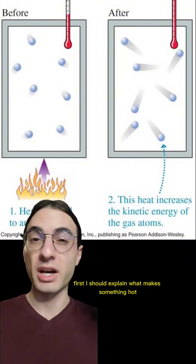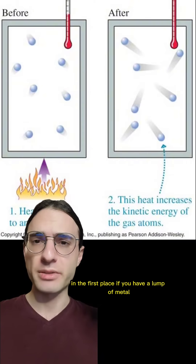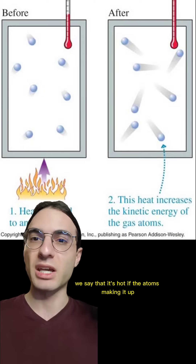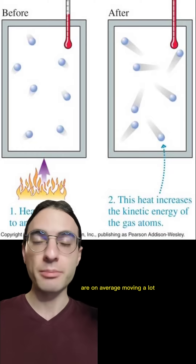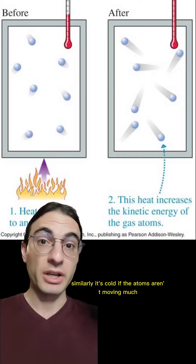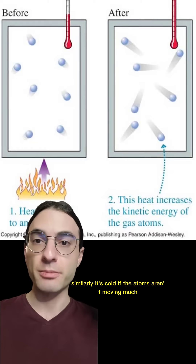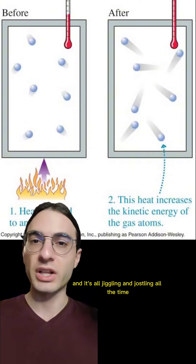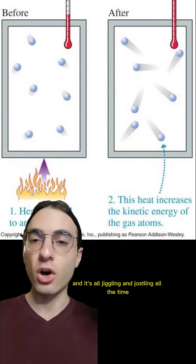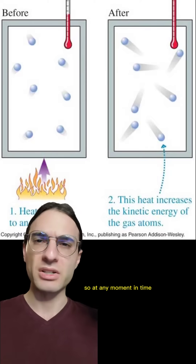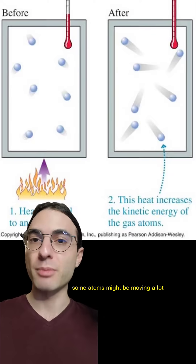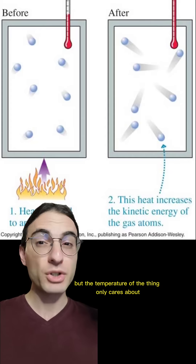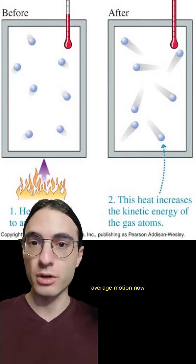First, I should explain what makes something hot in the first place. If you have a lump of metal, we say that it's hot if the atoms making it up are, on average, moving a lot. Similarly, it's cold if the atoms aren't moving much. Now there's a lot of atoms in any given lump of matter, and it's all jiggling and jostling all the time. So at any moment in time, some atoms might be moving a lot and some might be moving only a little, but the temperature of the thing only cares about average motion.